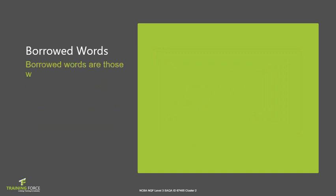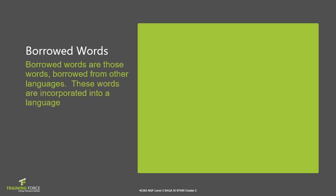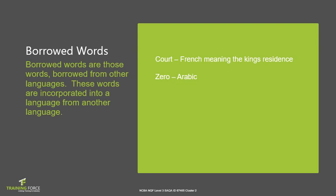Borrowed words are those words borrowed from another language and incorporated into a language from other languages. For example, 'court' comes from French and means the king's residence, though we know it as a place of legal judgment. 'Zero' comes from the Arabic language. 'War' is Old French for 'where.' 'Very' is Old French for 'very.' And 'person,' a word we're all accustomed to today, comes from the Latin word 'persona.'